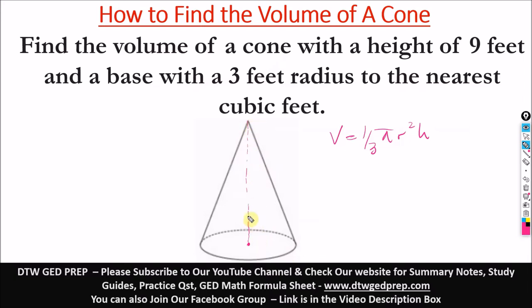So the height is a perpendicular line from the tip of the cone here to the center of the base. That's the height. While your radius is also from the center of the base of the circle, that's the base, the circle to the circumference.